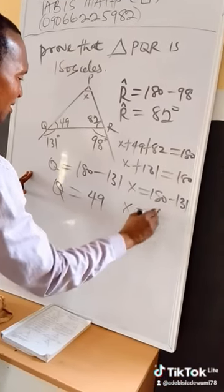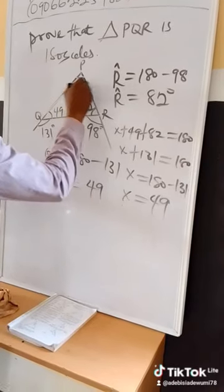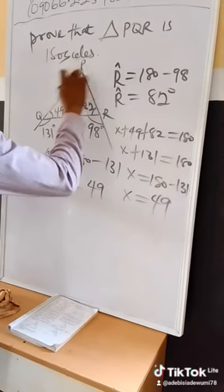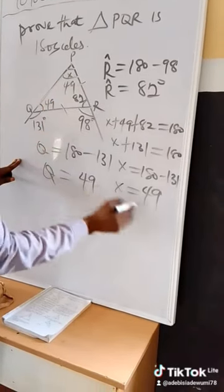So X equals 49. So automatically this angle is 49. The base angles are equal. So it is proved.